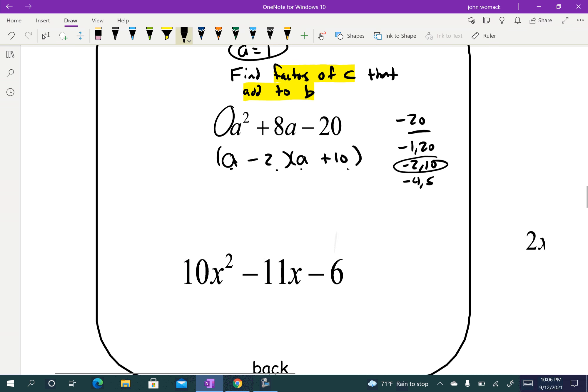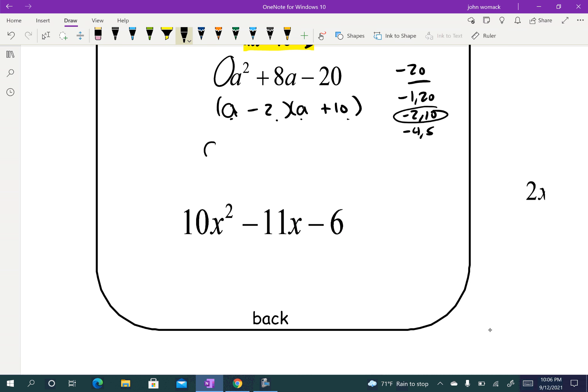So the second type of problem is when a does not equal 1. So in this example right here, you see that 10 out in front? It's got a leading coefficient. When we do these, these are going to be the guess and check problems. The process is really similar to the one above. That little shortcut where we look for the factors of c to add up to b, that doesn't work anymore. But other than that, the process is pretty similar. So we should be checking for a common factor. This one doesn't have one, but you should check that and take that out first before you do anything else.